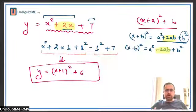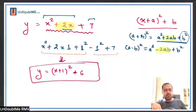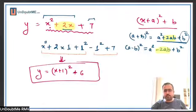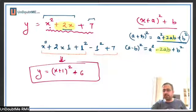Now try to recall quadratic graphs. There were two things we have to use. First: is it an upward parabola or a downward parabola? How do we decide? Student: If it's positive or negative — the coefficient of x squared.